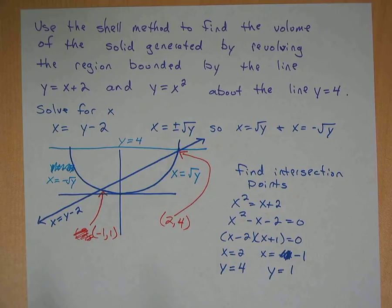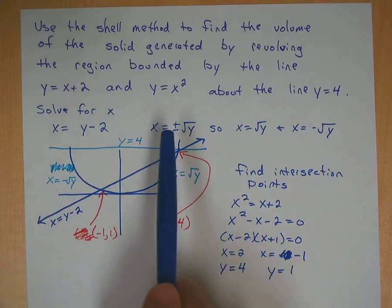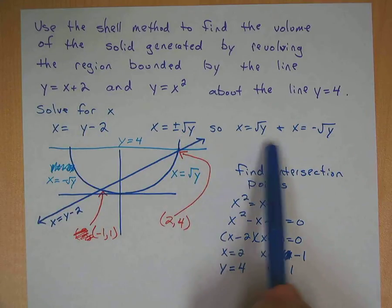So I solved both of these equations for x. This one's pretty easy. Move the 2 over, you get x equals y minus 2. This one takes the square root plus or minus, so you get two different equations.